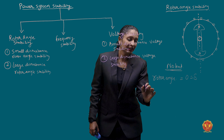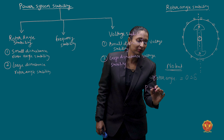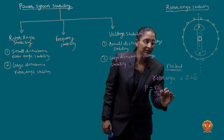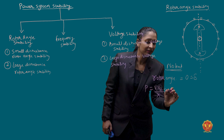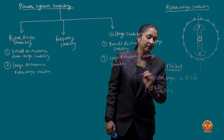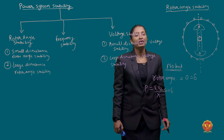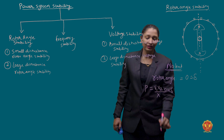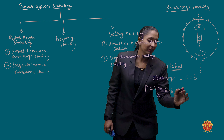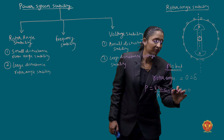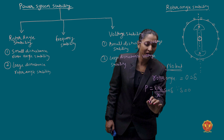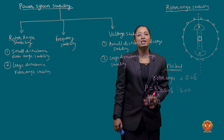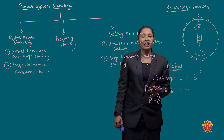We all know power is equal to V1 V2 Y sin(delta). Because delta is zero, the power will remain zero. As the load increases, the power also increases with delta.